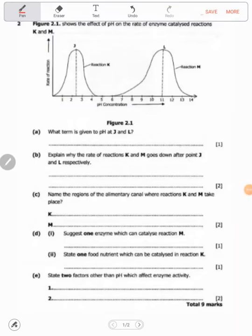Hello, welcome to this video. This will be done in less than five minutes. Figure 2.1 shows the effect of pH on the rate of enzyme-catalyzed reactions K and M. What term is given to pH at J and L?